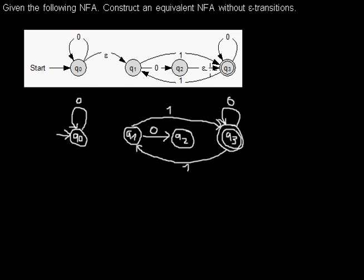Only the epsilon transitions will lead to new transitions. If you are in Q0 and you want to read a one, you don't have a direct transition from Q0 with a one, but you can first take the epsilon transition to Q1, and from there take a transition with a one. So these two arcs combined become one new transition from Q0 to Q3 with a one as input symbol.